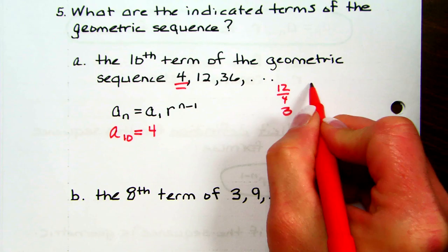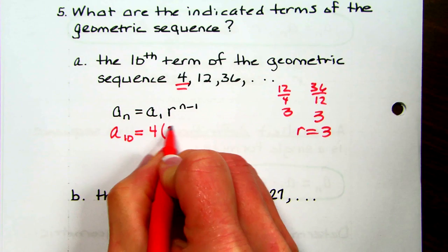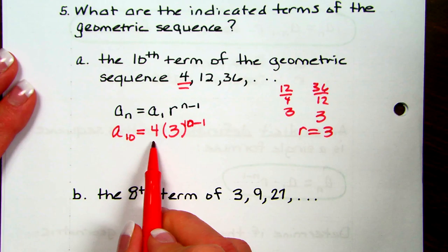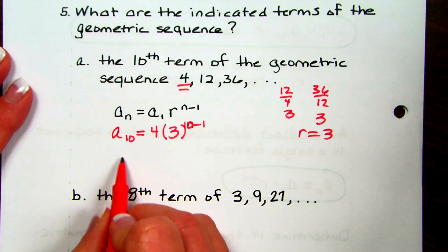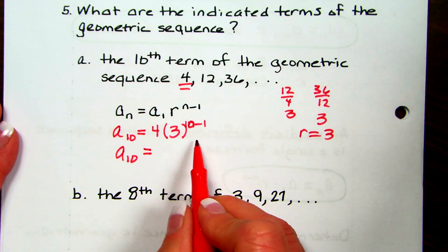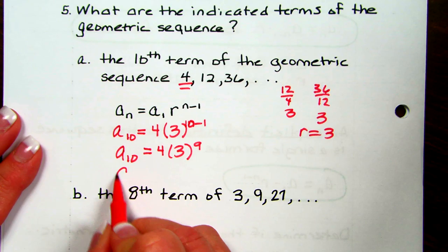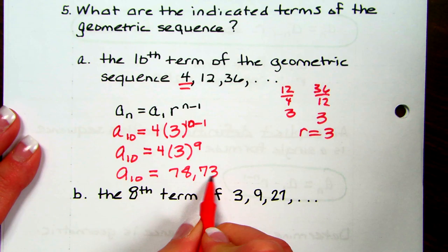What is the common ratio? 12 divided by 4 is 3. 36 divided by 12 is 3. So R is 3. So times 3 to the n, which would be 10 minus 1. This is a lot like the exponential: your initial amount, your growth factor, and then your exponent. So the 10th term would be 4 times 3 to the 9th, which gives you 78,732.